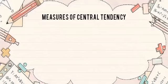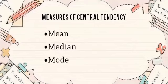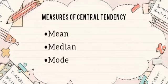Measures of Central Tendency. Mean, median, and mode are the three main measures of central tendency.